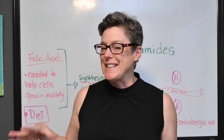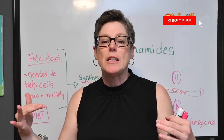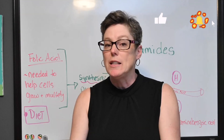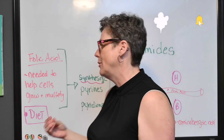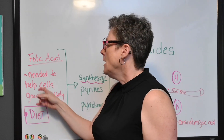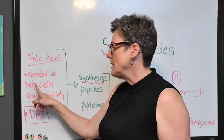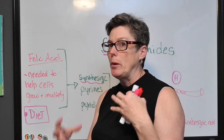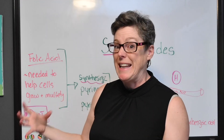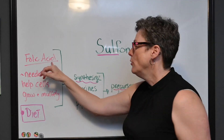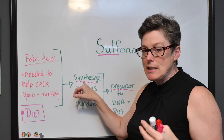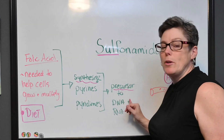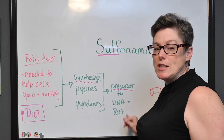Let's look at what folic acid does for us. First of all, our bodies do not synthesize it — we don't make it naturally, so we need to consume it through our diet, those leafy vegetables kind of thing. Folic acid is needed to help our cells grow and multiply, so already I'm thinking grow and multiply — that's a function of DNA. Folic acid is needed to synthesize purines and pyrimidines, which are precursors to the production of DNA and RNA.